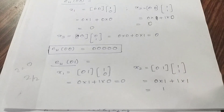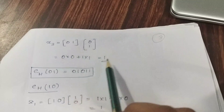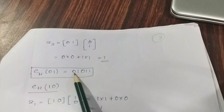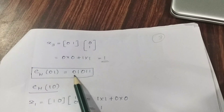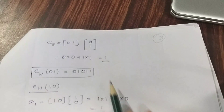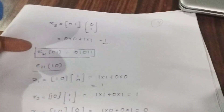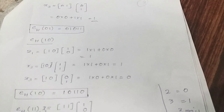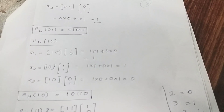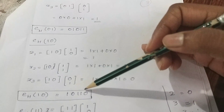Then we find x3 for e(0,1), filling x1, x2, x3. This uses the second row. The final answer for e(0,1) is 10110.